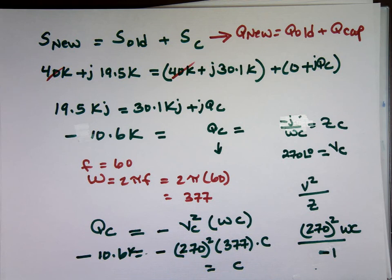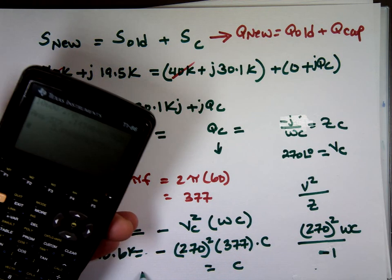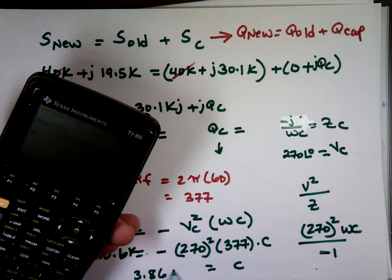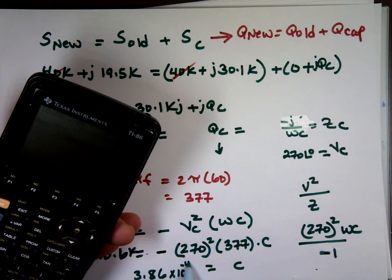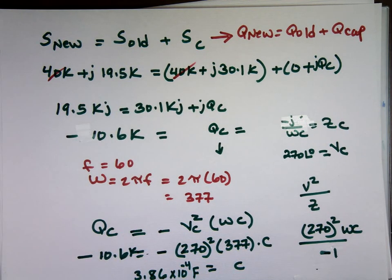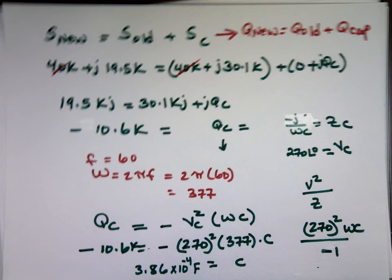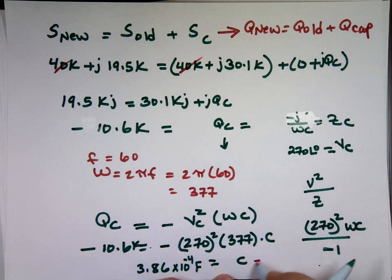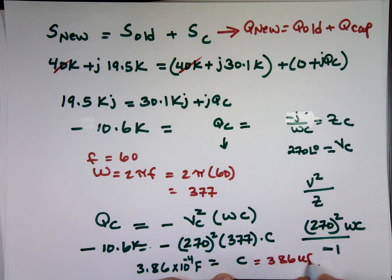10,600 divided by 270 squared equals divided by 377. I need a capacitor roughly here of 3.86 times 10 to the negative 4 farad, which is really approximately, that's equal to, move the decimal point two places to the right, 386 microfarad. Micro is 10 to the minus 6. That's what the value that you need.